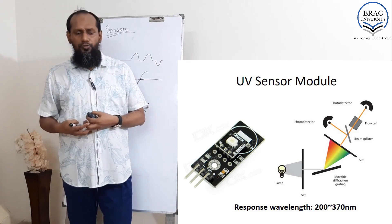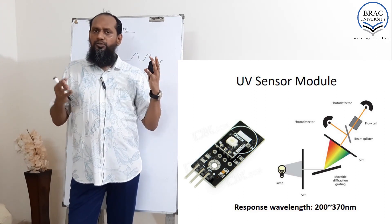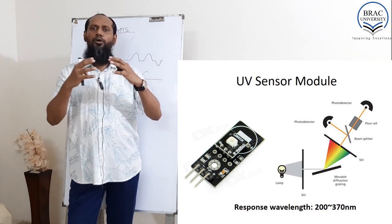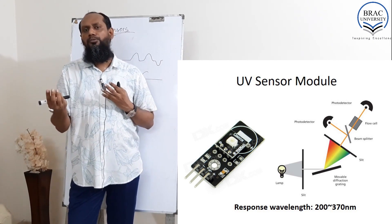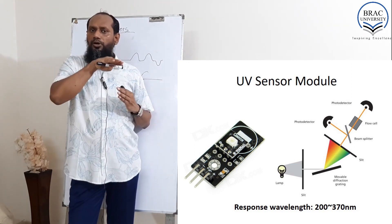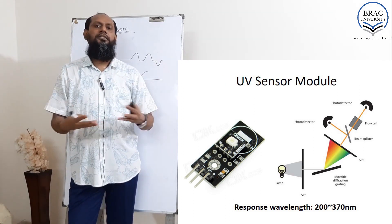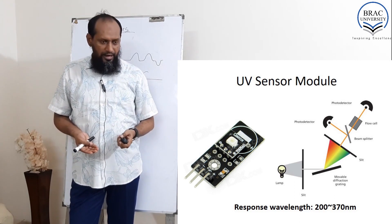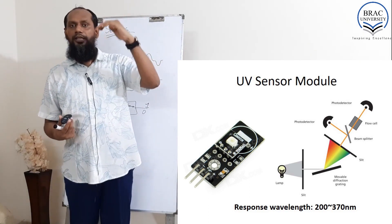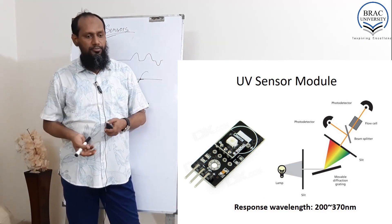Another sensor is the UV sensor module, which works in a similar way but uses optical engineering to only allow UV light to pass through — blocking all other lights using a prism or optical module. A light sensor then senses the UV light. It has a threshold value; if crossed, it signals that UV light is present in the environment. The responsive wavelength is 200 to 370 nanometers.